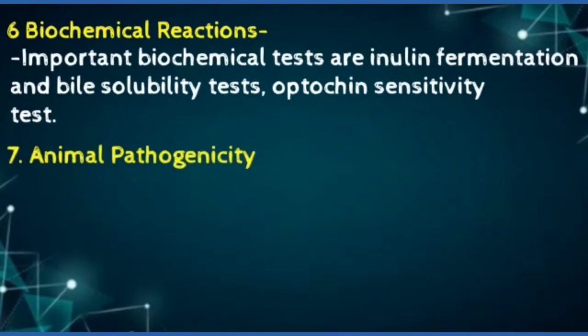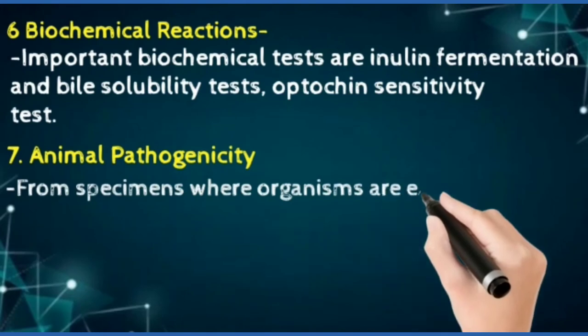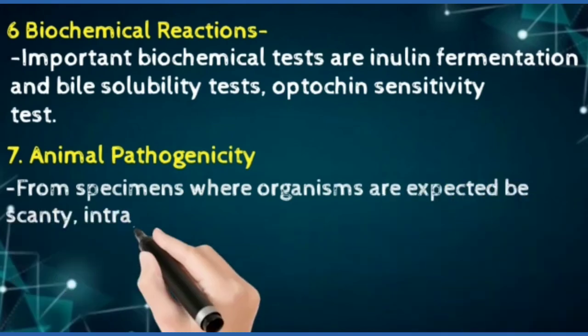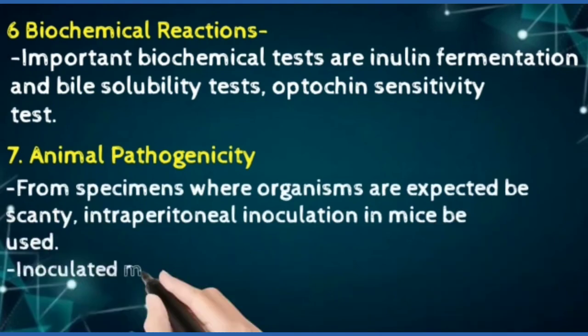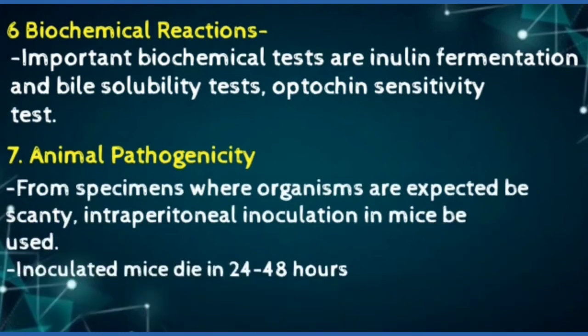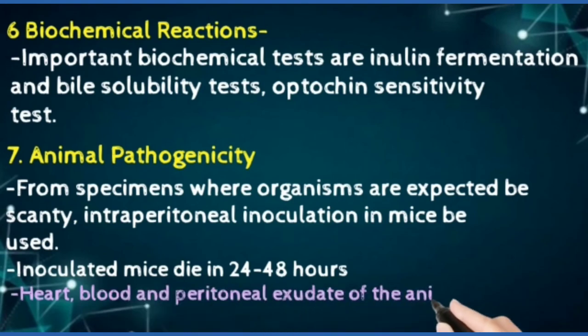For animal pathogenicity, from specimens where organisms are expected to be scanty, intraperitoneal inoculation in mice can be used. Inoculated mice die in 24 to 48 hours. Heart blood and peritoneal exudate of the animal will show pneumococci.